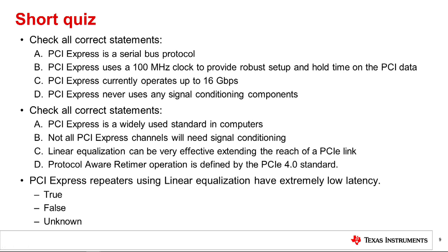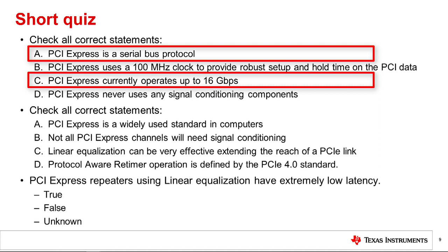To refresh your mind on what we discussed, let's go over a short quiz. Check all correct statements. A: PCIe Express is a serial bus protocol. B: PCIe Express uses a 100 MHz clock to provide robust setup and hold time on the PCI data. C: PCIe Express currently operates up to 16 gigabits per second. D: PCIe Express never uses any signal conditioning components. The correct answers are A and C.